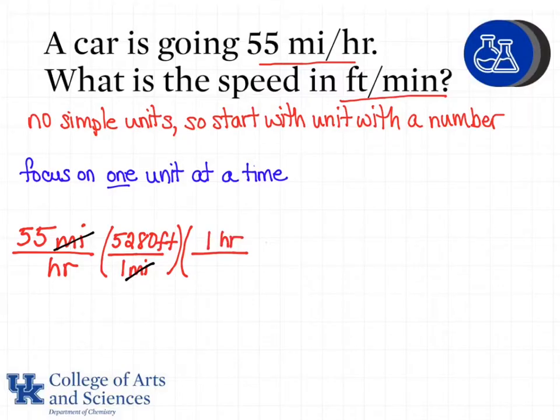So now I'm going to put hour on top because hour was in the denominator in the initial value but I need to cancel it out, and in order to cancel something in the denominator the unit needs to be in the numerator. And I know that one hour is equal to 60 minutes. Now my units of hours cancel out because one is in the numerator and one is in the denominator and I see that the units left are feet per minute.